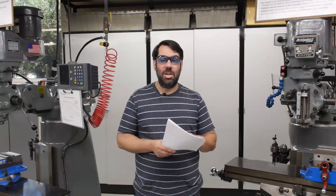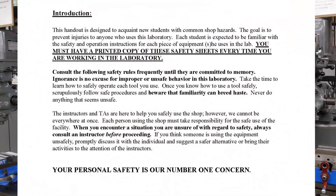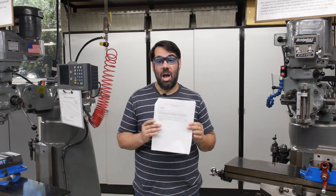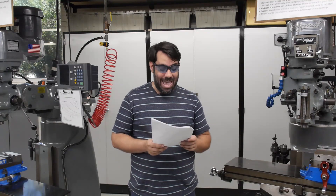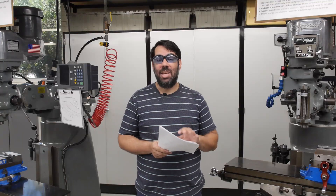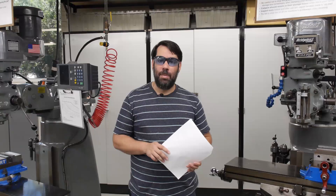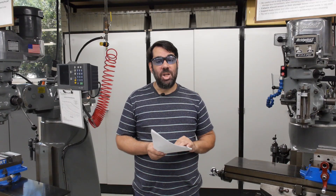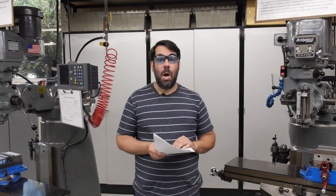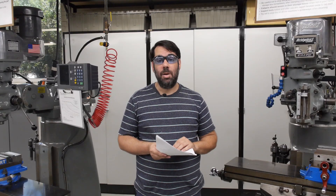Page 3 begins a discussion on general shop safety. Your personal safety is always our number one concern when you're working in our facility. Consequently, you must always have a printed copy of your equipment safety sheets on your person anytime you're in our facility. Consult these safety rules frequently until they are committed to memory, and ignorance is never an excuse for improper or unsafe behavior in our laboratory. When you encounter a situation you are unsure of with regard to safety, we always want you to stop and ask a question before proceeding and doing something that could cause injury or equipment damage.